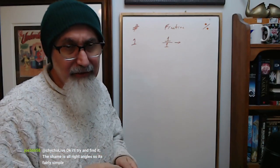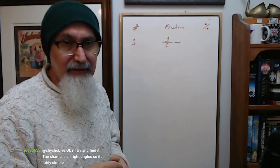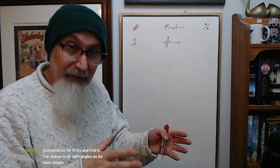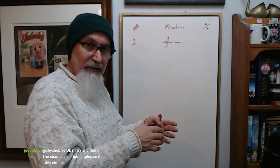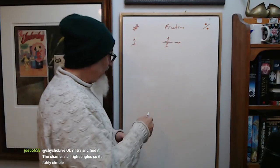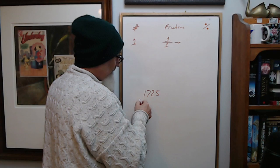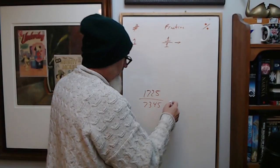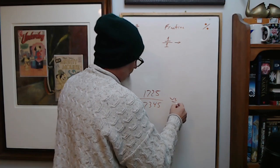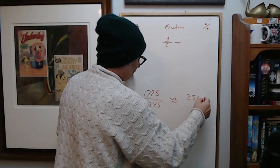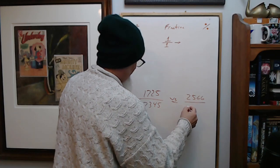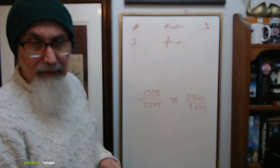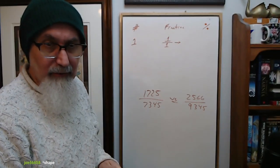By the way, the reason we do percentages is because we want to normalize things. We want to standardize things so we can do a direct comparison to something else. For example, if I said 1725 divided by 7345 versus 2566 over 9345, which one's bigger, which one's smaller?